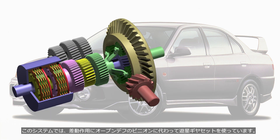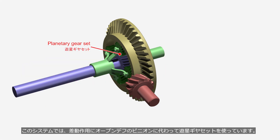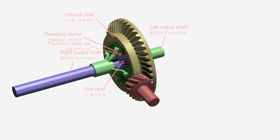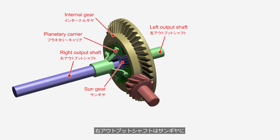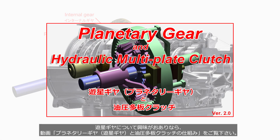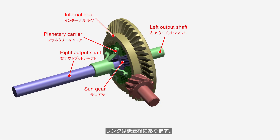For differential action, this system uses a planetary gear set instead of the pinion gears in a conventional differential. The right output shaft is connected to the sun gear, and the left output shaft is connected to the planetary carrier. If you are interested in planetary gear sets, please watch the video titled 'Planetary Gear and Hydraulic Multi-Plate Clutch: How They Work.' The link is in the description.